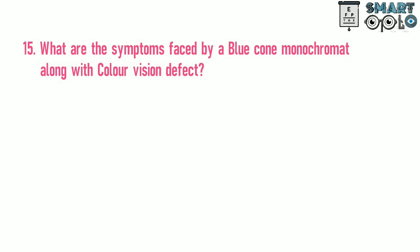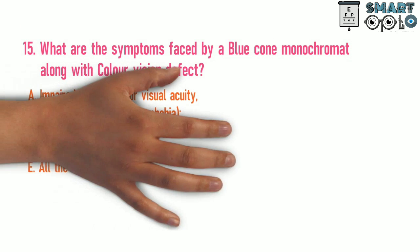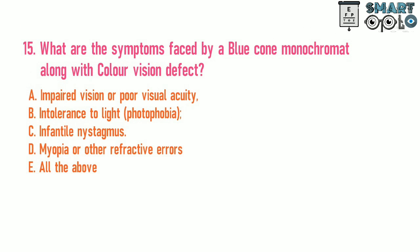Question 15. What are the symptoms faced by a blue cone monochromat along with color vision defect? A. Impaired vision or poor visual acuity. B. Intolerance to light, photophobia. C. Infantile nystagmus. D. Myopia or other refractive errors. E. All of the above.